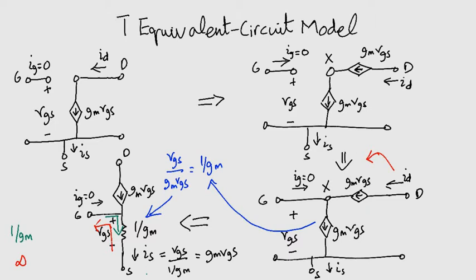Now notice that we did not include the output resistance R0. If we were to do that, our circuit will look like this.